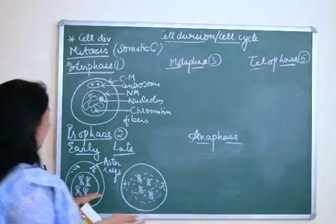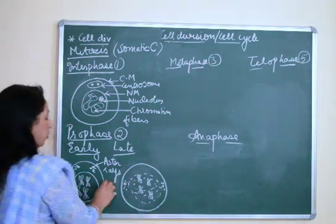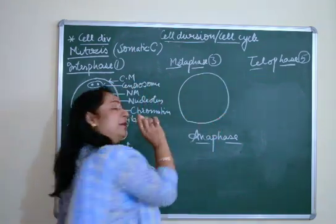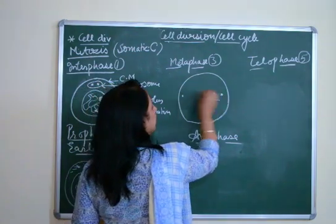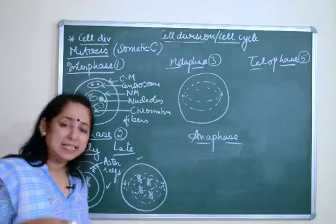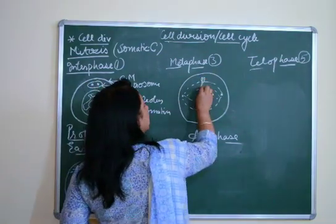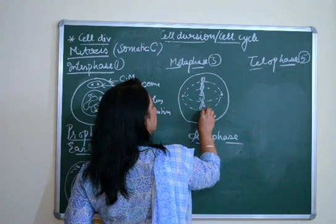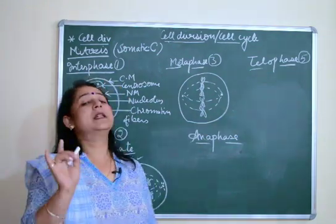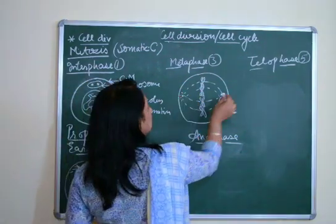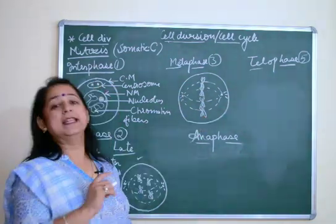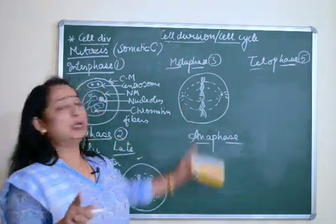After prophase comes metaphase. The nuclear membrane completely disappears. The chromosomes, which were haphazardly placed, are now aligned in the equatorial plane — that is, in the center. The significant feature of metaphase is that all chromosomes align at the equatorial plane. This phase is very clearly and beautifully visible under a microscope.